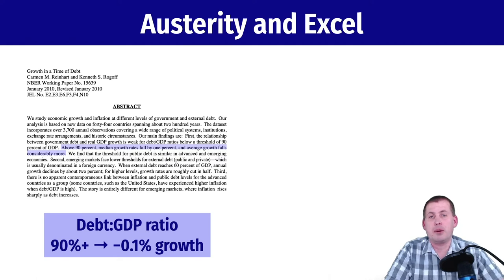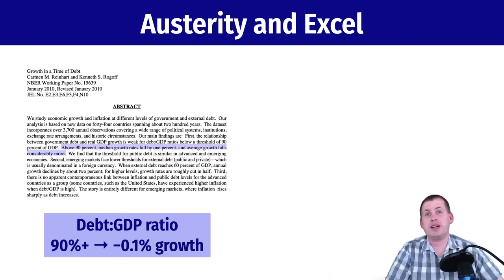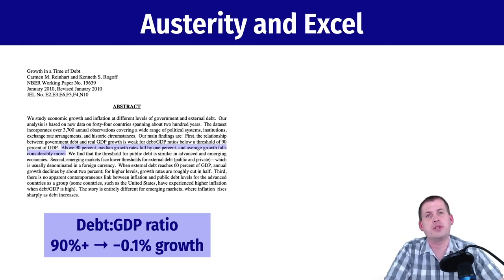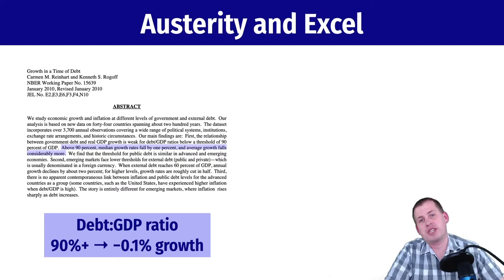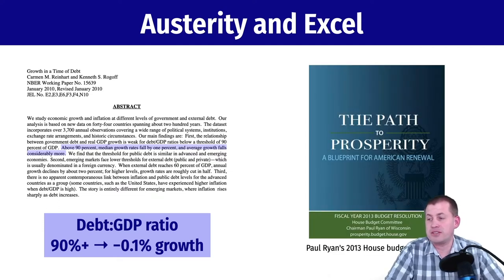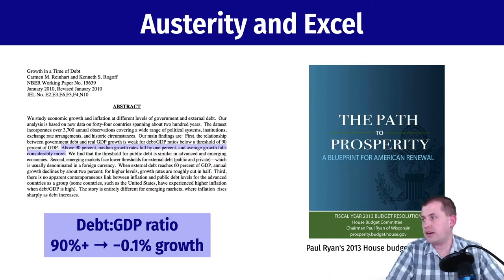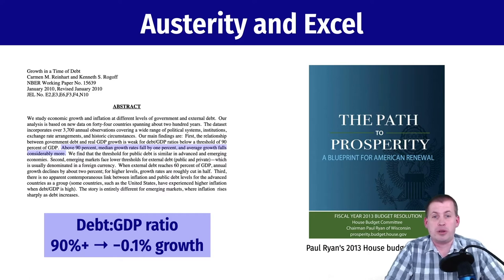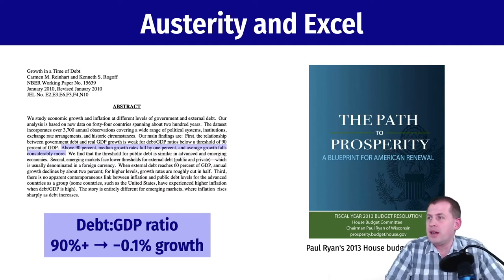This was in 2010, right at the tail end of the Great Recession, when tons of governments were spending lots of money and taking on debt to recover. After this paper came out, lots of policymakers said we need to not have high debt levels because it's going to hurt GDP growth. Officials in Greece, Ireland, and other European countries facing economic crises started implementing austerity measures in part because of this research. Even in the US, Speaker of the House Paul Ryan cited the Reinhart-Rogoff paper in his House budget resolution.